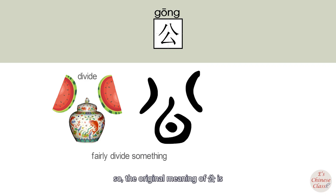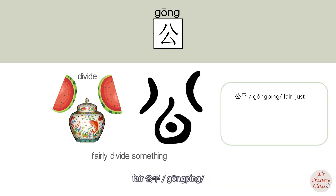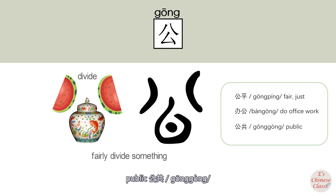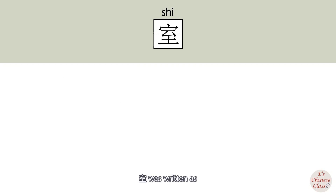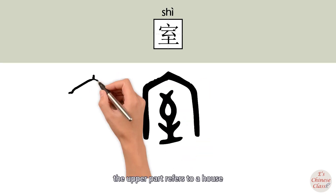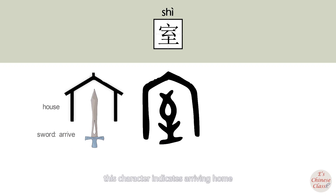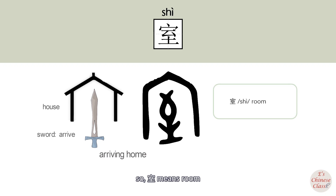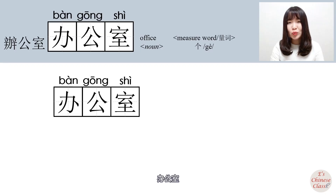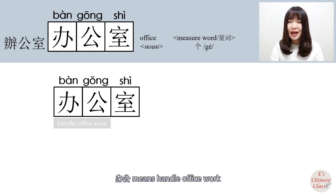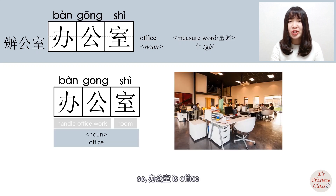So the original meaning of 公 relates to fairness. 室 indicates arriving home, so 室 means room. Therefore, 办公室: 办公 means to handle office work, 室 means room, so 办公室 means office.